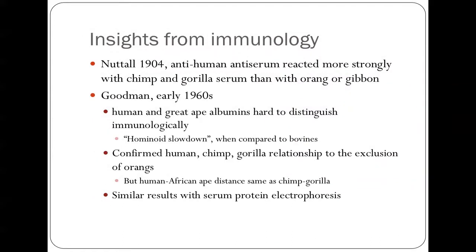So what kind of evidence can we look for from molecules to try and resolve this question? Well, in fact, this subject goes back a long way, back even to 1904, where this guy Knuckles showed that human, if you raise antiserum against human serum, you get much stronger reaction with that anti-human antiserum with gorilla and chimp serum than you do with orang or gibbon, suggesting that this is being supported. Goodman, in the early 1960s, showed that it actually was quite hard to distinguish between the human and great albumens, and he suggested there was this kind of hominoid slowdown. He confirmed that human, chimp, gorilla belonged together to the exclusion of orangs, but couldn't actually work out whether the distance between humans and the African apes was the same as the distance between chimps and gorillas. Similar results were obtained using serum protein electrophoresis.